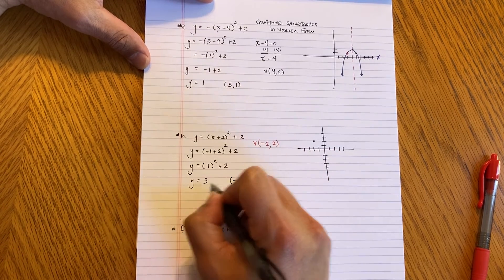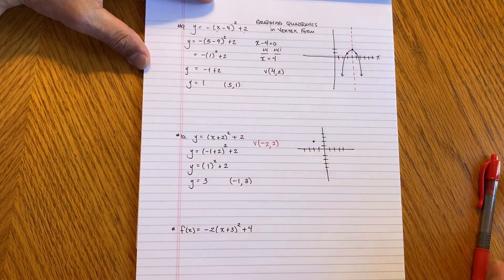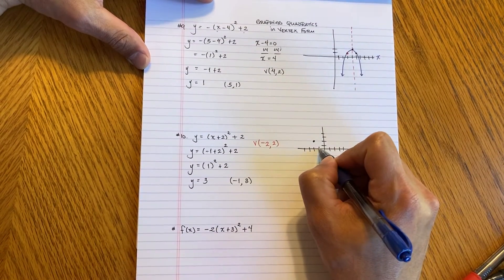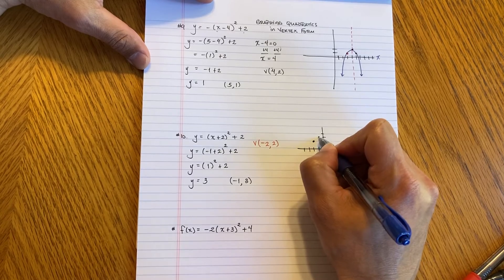When I plugged in negative 1, what did I get? I got positive 3. So I come over here and let's use my blue, negative 1, positive 3. Right about there.